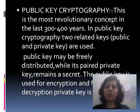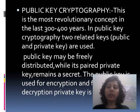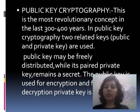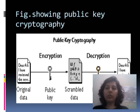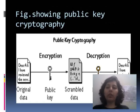Public key cryptography is the most revolutionary concept in the last 300 to 400 years. In public key cryptography, two related keys — public and private — are used. The public key may be freely distributed while the private key remains secret. The public key is used for encryption and the private key is used for decryption. Both entities — private key and public key — are used together for encryption and decryption.